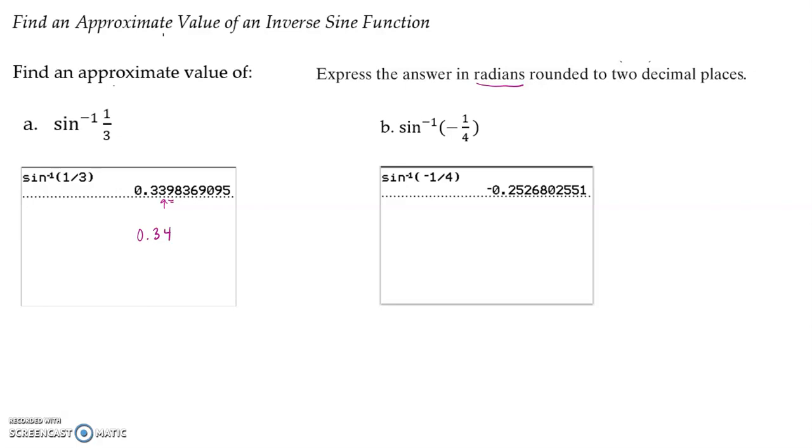For part b, type inverse sine of negative one-fourth into your calculator. We get -0.2526, and if we're cutting this off at two decimal places, this gives us an answer of -0.25. Make sure your answer is negative.